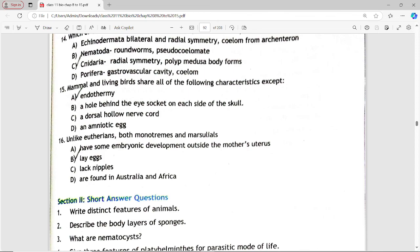Next is: unlike eutherians, both monotremes and marsupials have some embryonic development outside the mother's uterus, lay eggs, are found in Australia and Africa. Answer is option B, lay eggs.